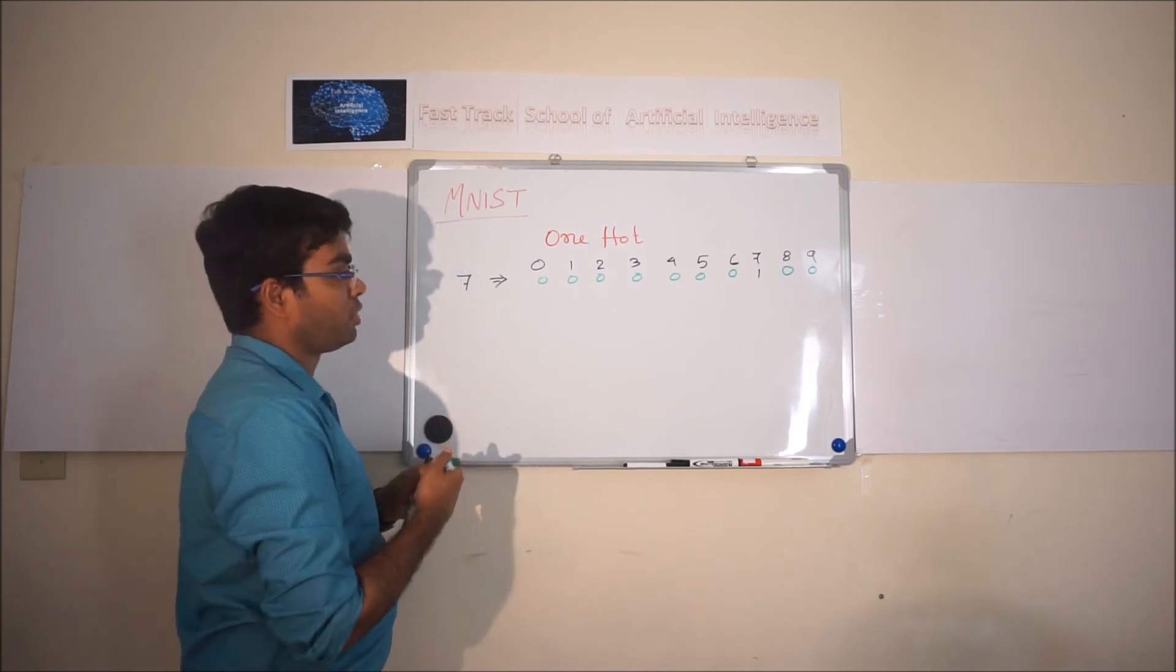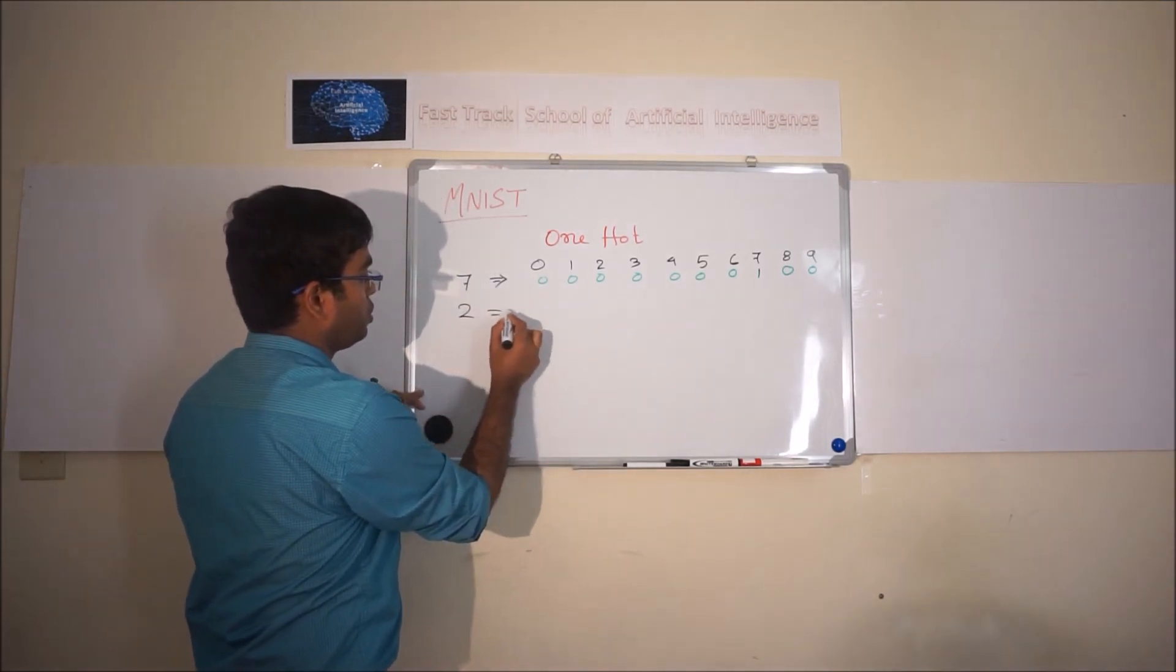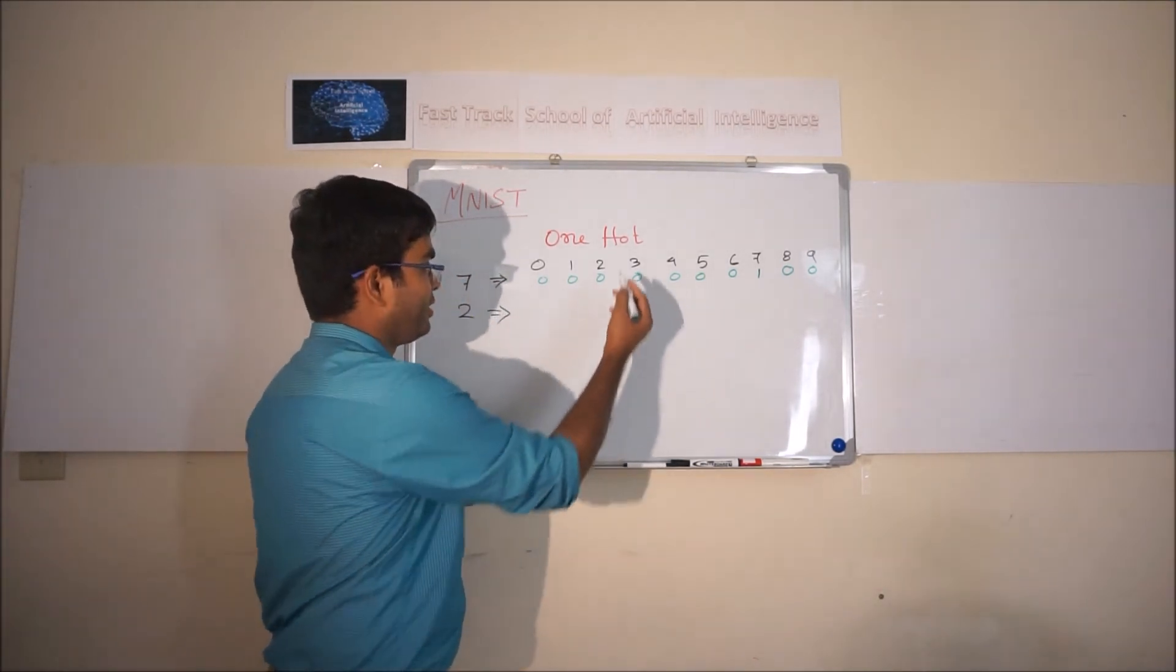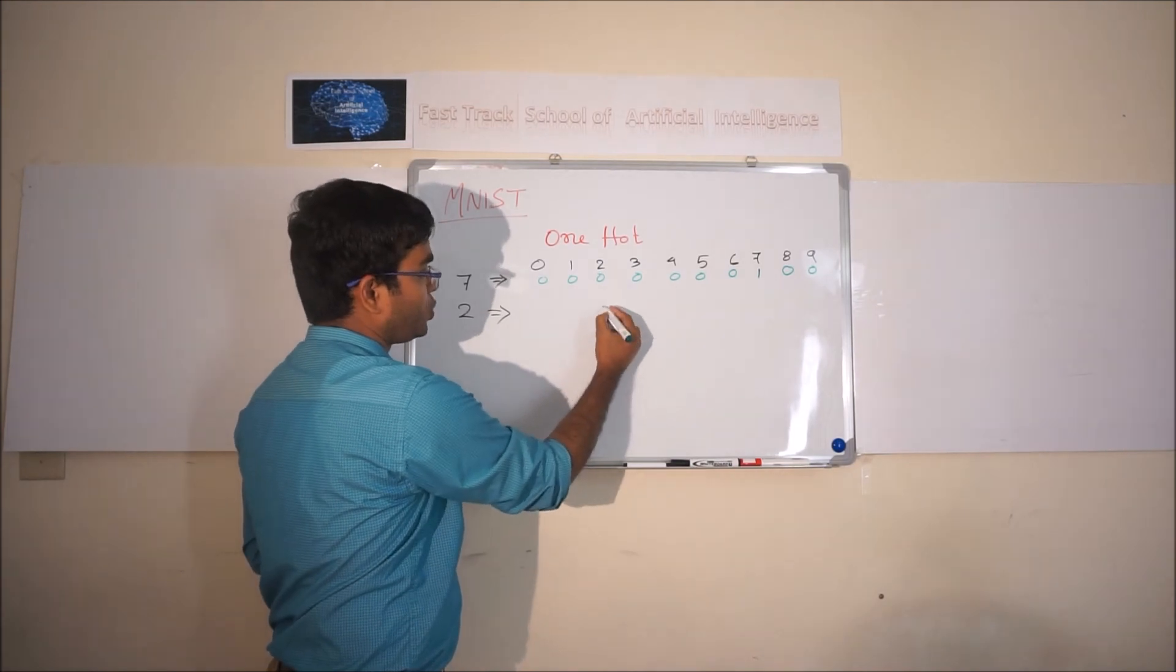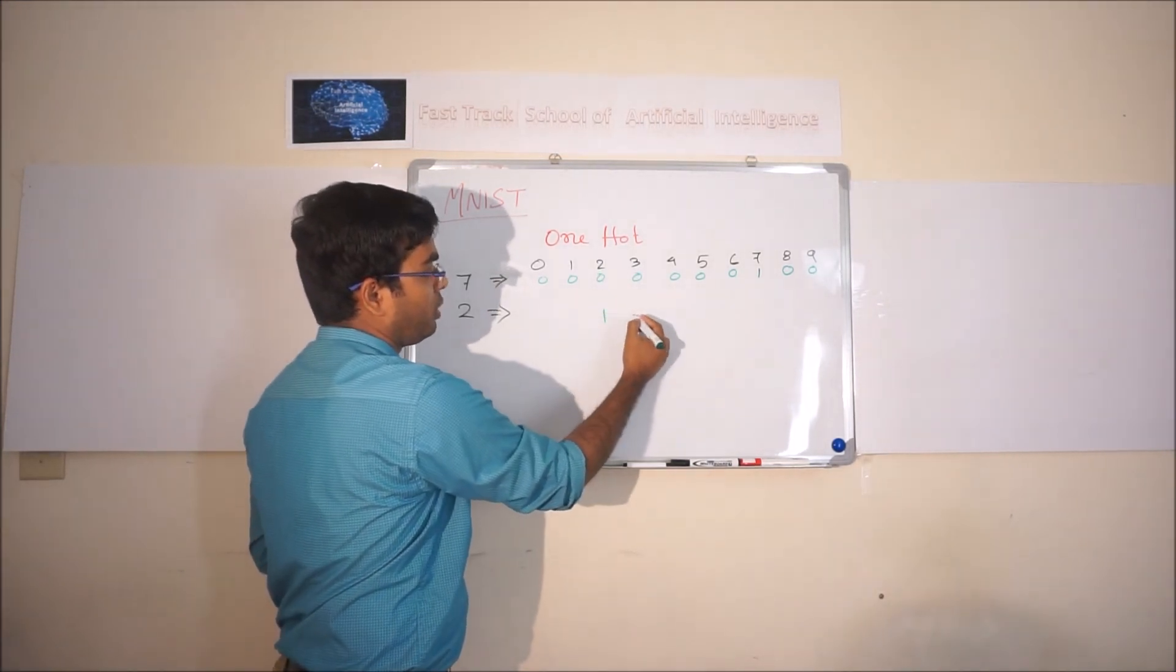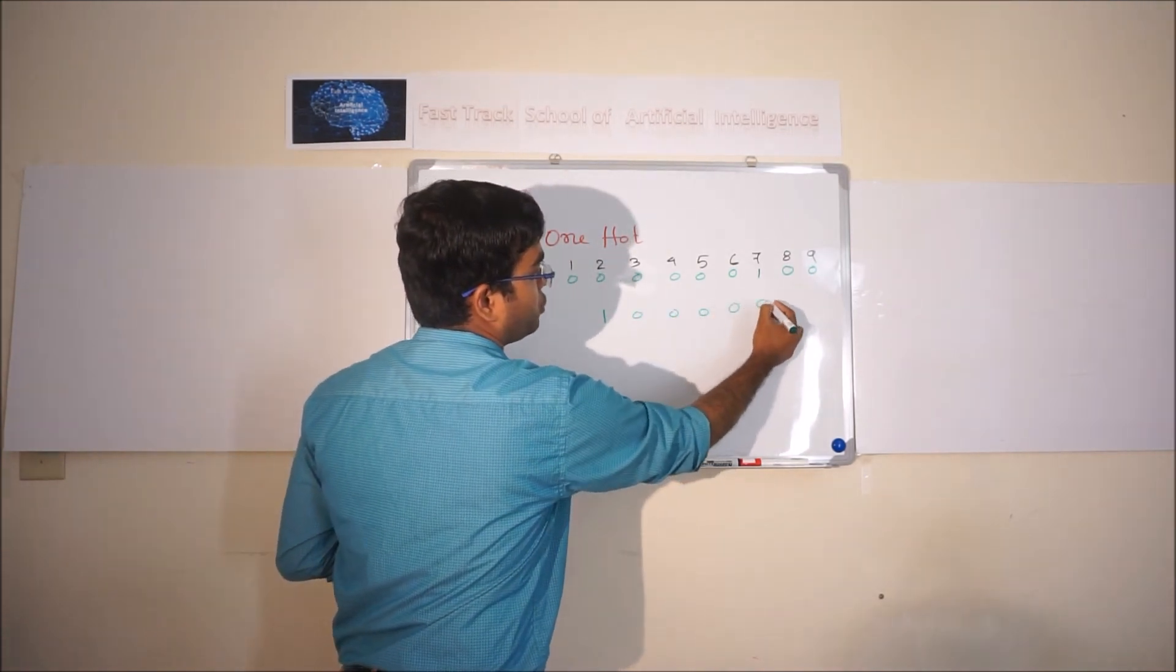And I will give one more example, it will be much clearer. Suppose we have 2, so in that case what will happen. You are right, the column number 2, column name 2 will have value 1, and rest of the columns will have 0 values.